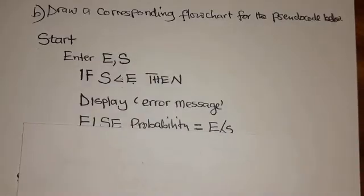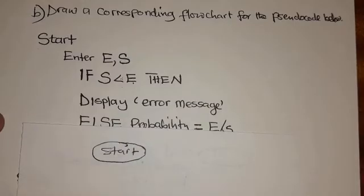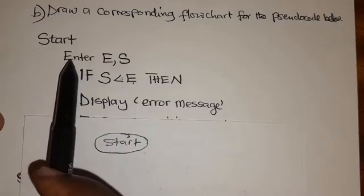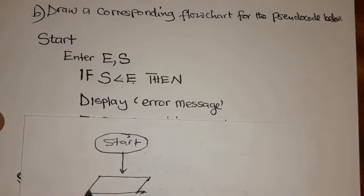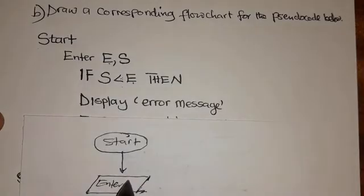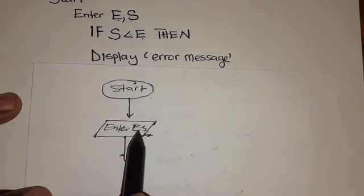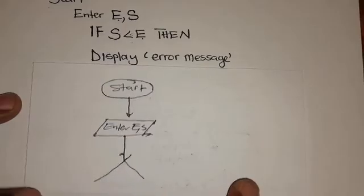Now let's transform this pseudocode into a flowchart. We start with an oval shape labeled 'start', then draw an arrow to a parallelogram labeled 'enter E, S'. After entering E and S, the computer must make a decision, so the next shape is a diamond.